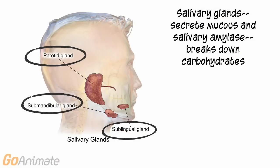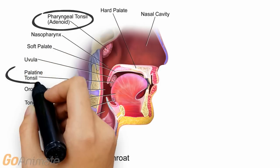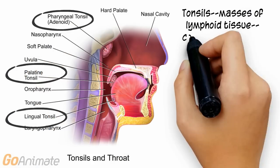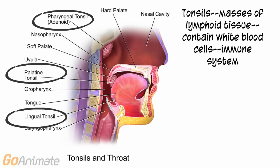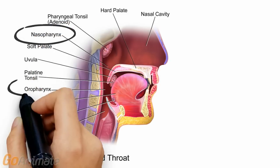The salivary glands secrete mucus and salivary amylase, which breaks down carbohydrates. There are three pairs of salivary glands: the parotids, sublinguals, and submandibular glands. The tonsils are masses of lymphoid tissue that contain white blood cells that help to fight off pathogens. There are the pharyngeal tonsils or adenoids, the palatines, and the lingual tonsils.